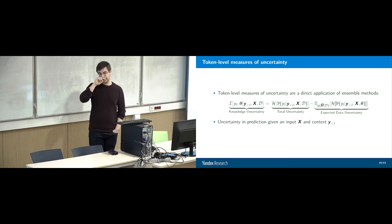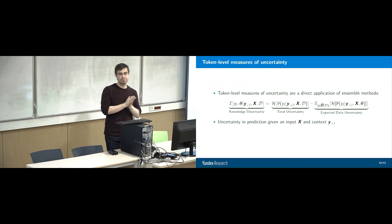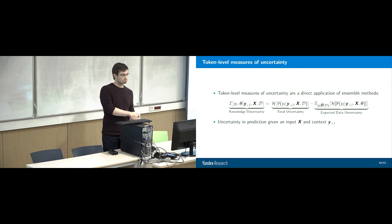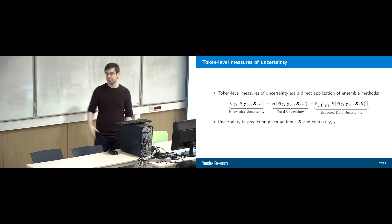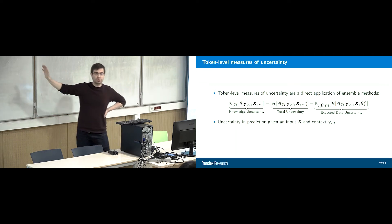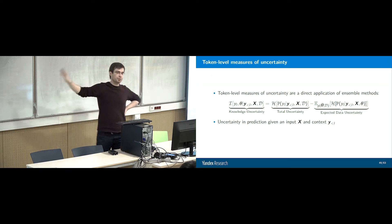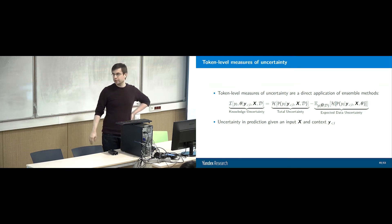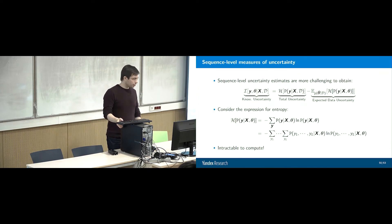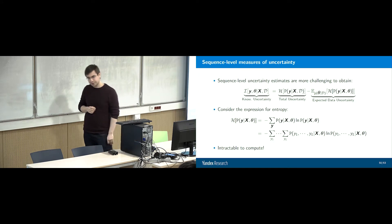How can we obtain measures of uncertainty at the token level using structured models? It turns out it's the same as before. We have an ensemble of models predicting Y with more conditioning. Token-level measures of uncertainty are the same as before — nothing changed. Straightforward application of ensemble methods. The question is how to do sequence-level measures of uncertainty.